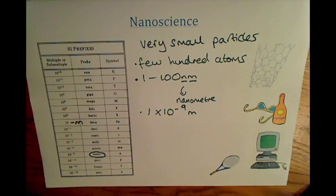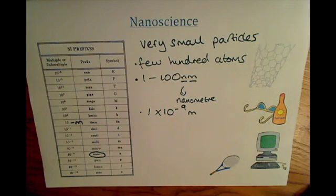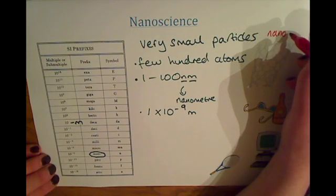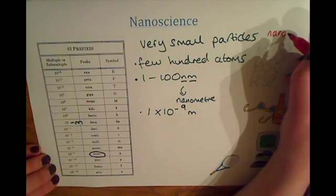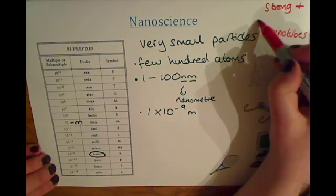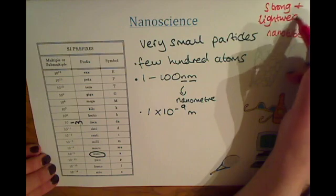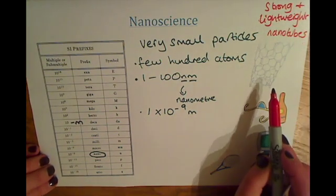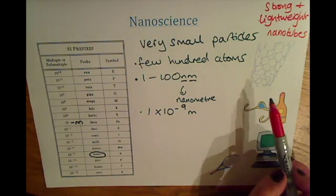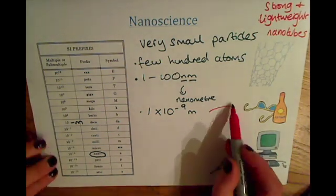Nanoparticles have lots of new uses. Nanoscience is relatively new technology and there are lots of useful products that have come about from the study of nanoparticles. These include things like nanotubes, which provide strong but lightweight building materials. For example, they can be used to reinforce tennis rackets, keeping them lightweight for the user while strengthening the material.